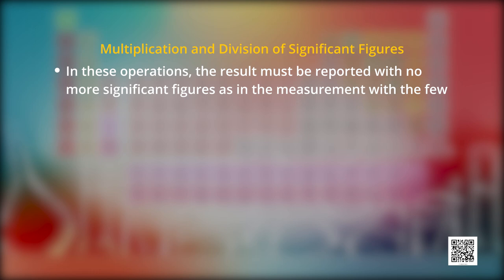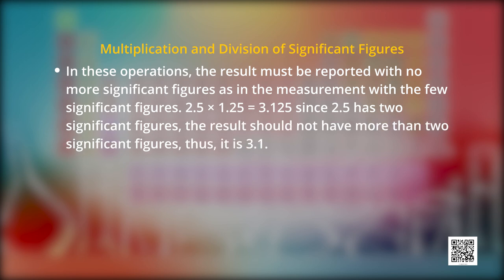While doing the multiplication and division, the result must be reported with no more significant figures as in the measurement with the few significant figures. For example, 2.5 when multiplied by 1.25, we get the result 3.125. Since 2.5 has two significant figures, the result should not have more than two significant figures. So, it should be 3.1.